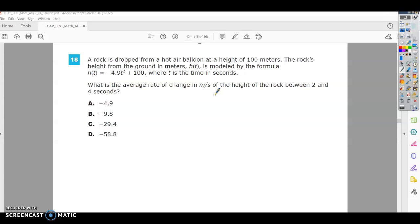So if we're looking at average rate of change, we know that the average rate of change is similar to the slope formula. So it's going to be y2 minus y1 over x2 minus x1. The first thing that we need to do is find our ordered pairs.